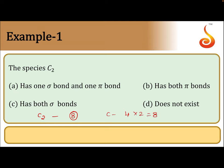So, what is the orbital configuration? KK, sigma 2s, sigma star 2s. After that, pi 2py, pi 2px — we can write pi 2px, pi 2py or pi 2py, pi 2px, either way. This is the order. After that, sigma 2pz.